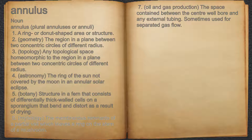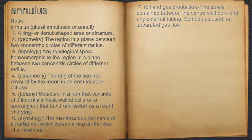6. Mycology: the membranous remnants of a partial veil which leaves a ring on the stem of a mushroom. 7. Oil and gas production: the space contained between the center wellbore and any external tubing. Sometimes used for separated gas flow.